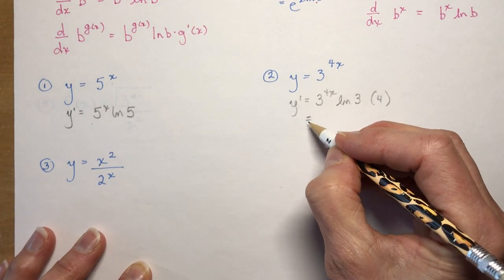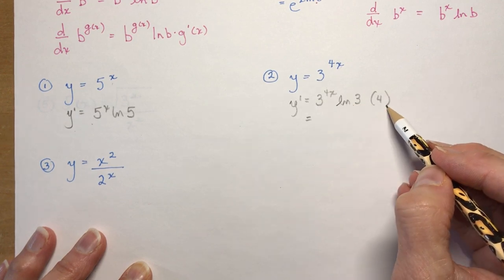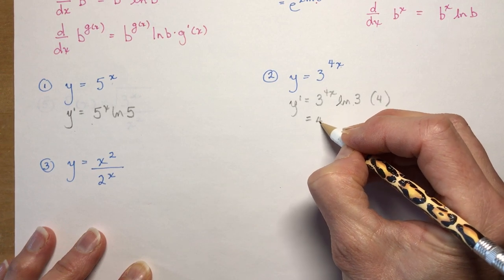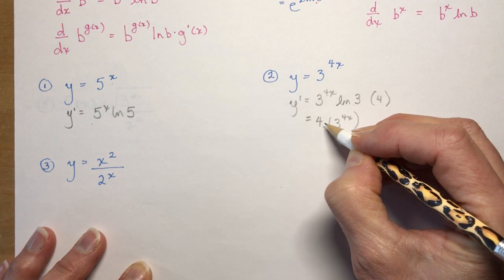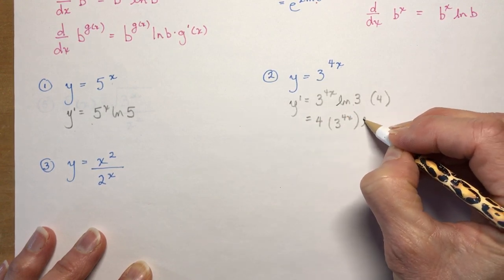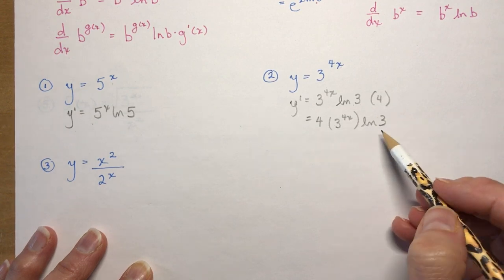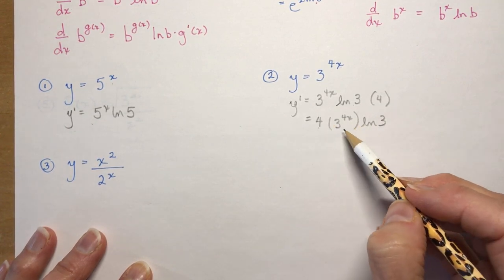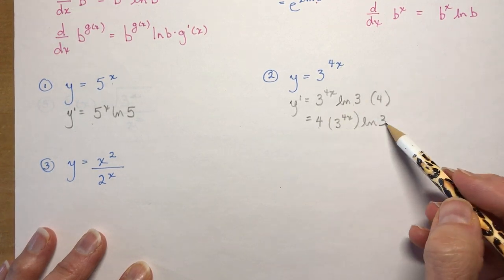And now the ln of the base, which is 3, and the derivative of the exponent, which is 4. So a few things to note here. Make sure you do not make this the ln of 12. That is not the same thing. And neither is it the same thing for you to multiply 4 times 3 here. Those are really bad math mistakes. So 4 times 3 to the 4x ln 3 is your solution.